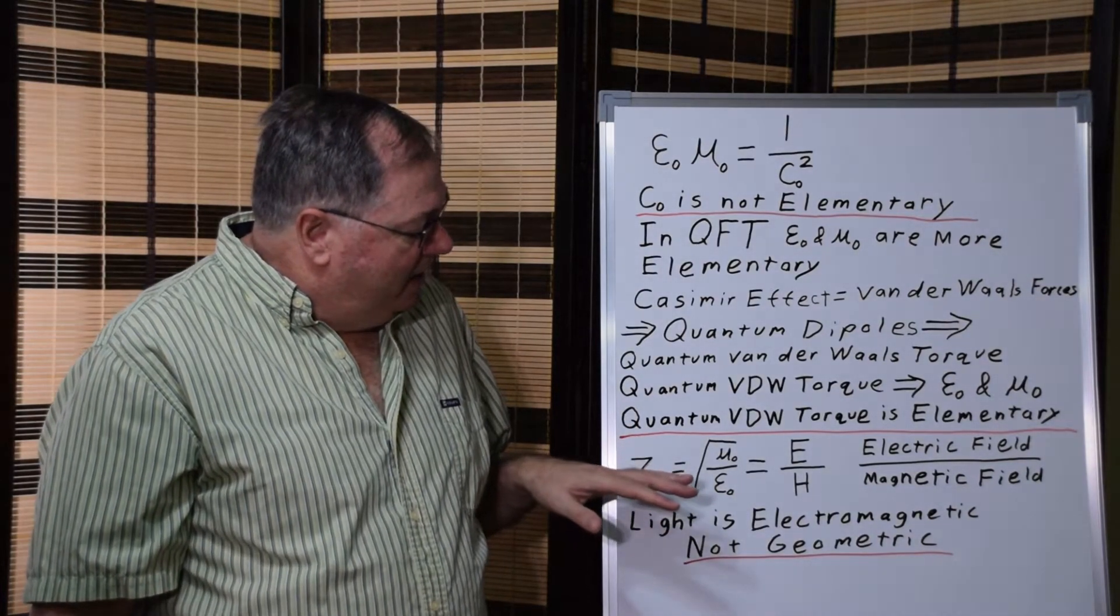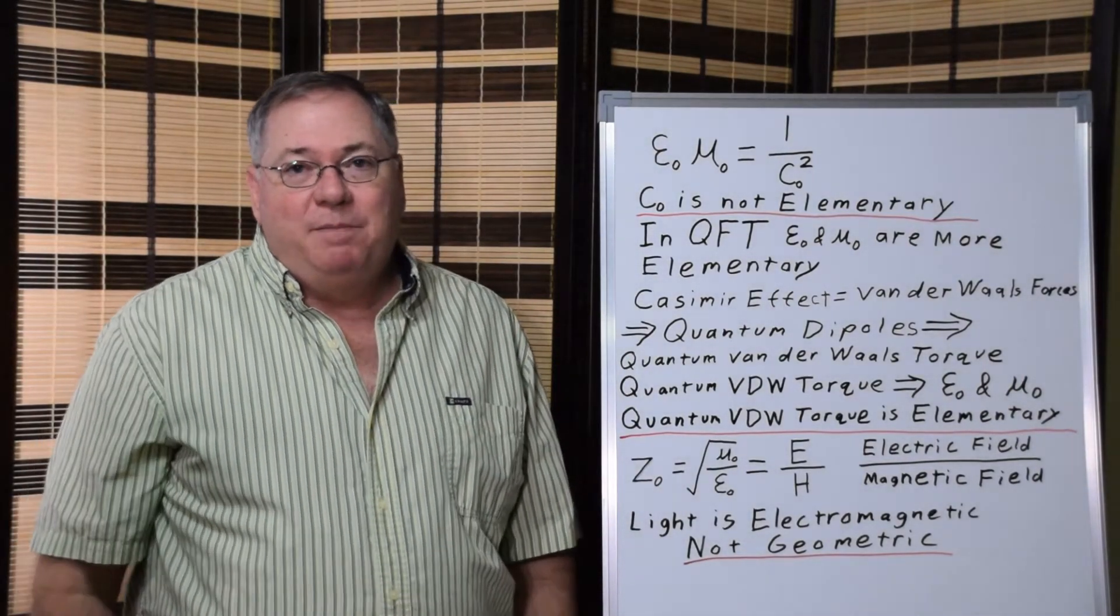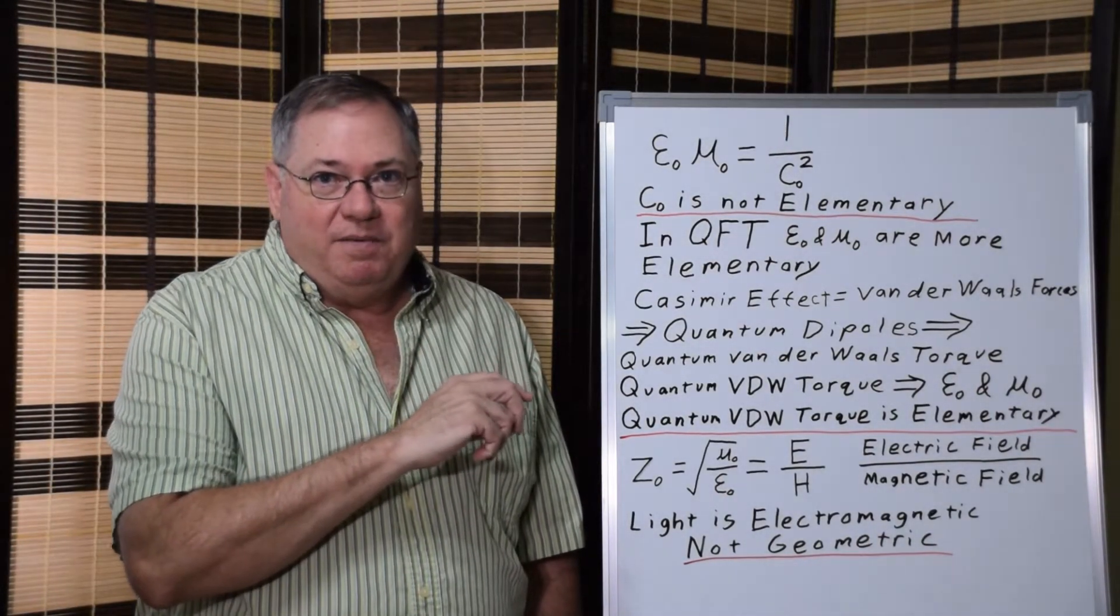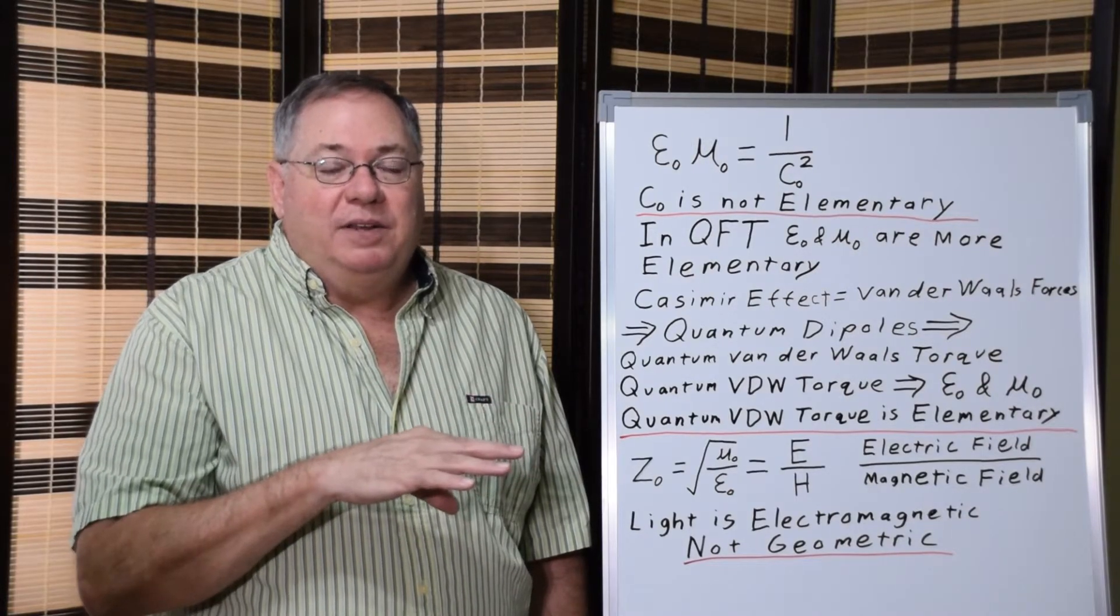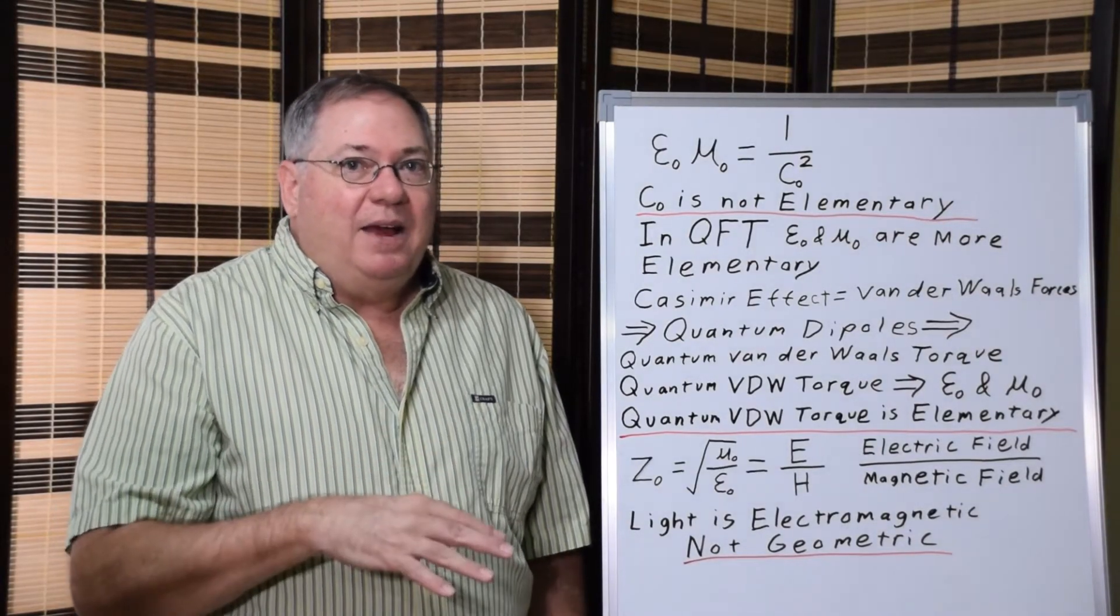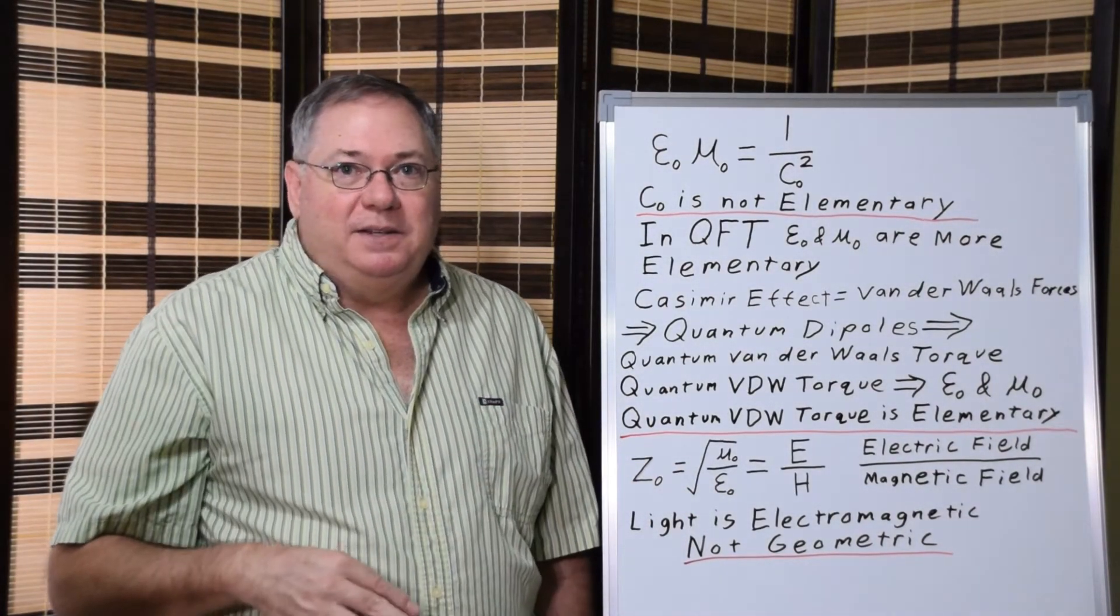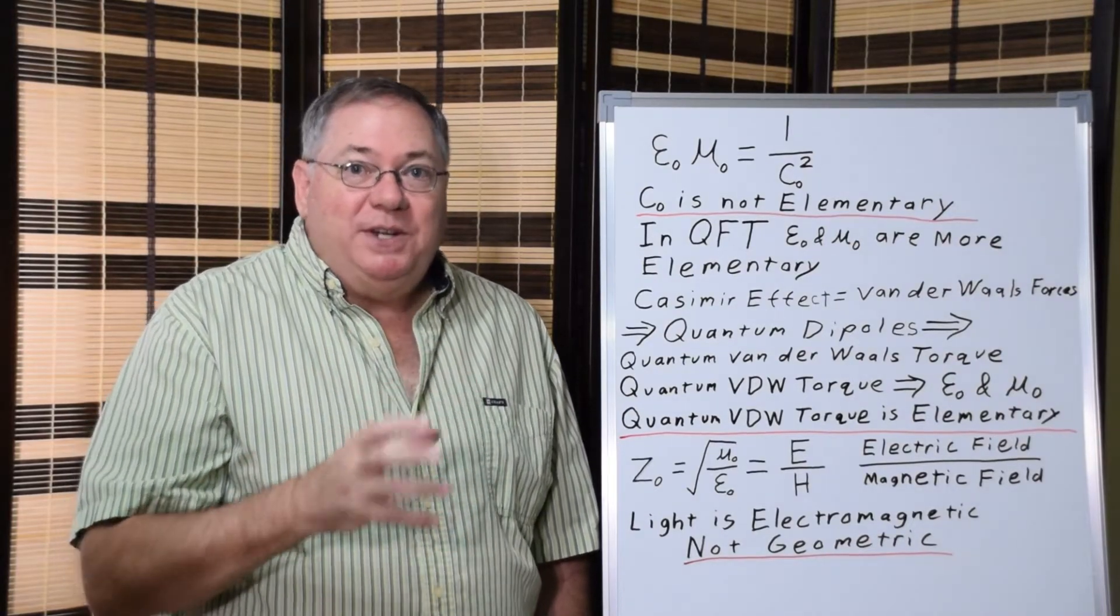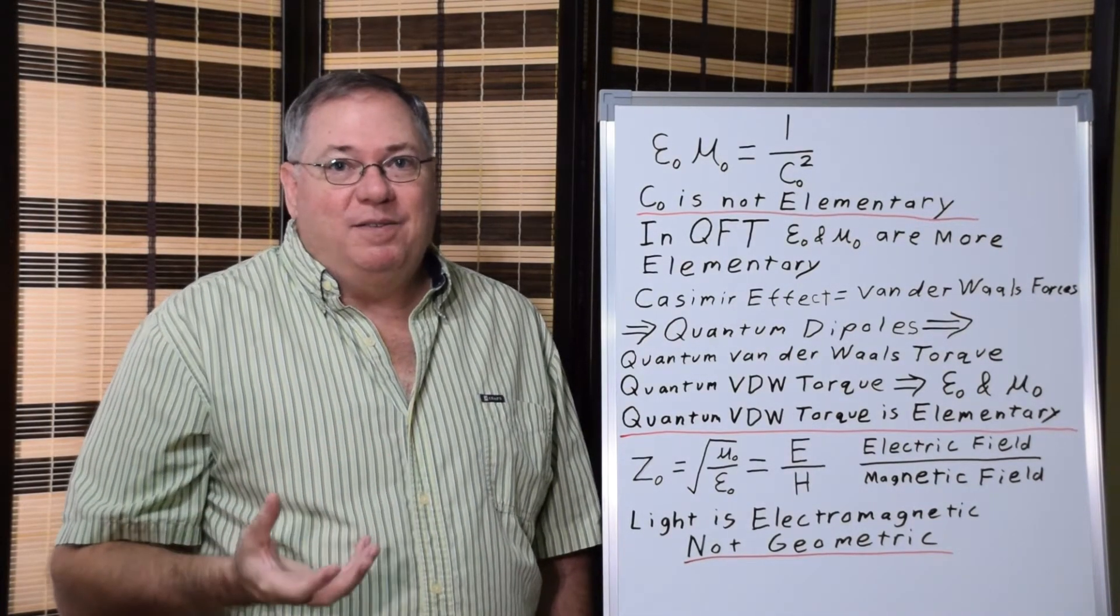So I can also mention the impedance of space, which is a function of the permeability over the permittivity and taking the square root, and which determines the ratio of the electric field strength to the magnetic field strength. And that ratio goes back to the electric and magnetic field strength of the fields produced by the photon. So you can look at it that way. The photon produces these fields. These fields are regulated by the permittivity and permeability as a function of the impedance of space. And once again, we have a speed of light and the actual transmission of light being a function of the electric and magnetic constant that comes out of the quantum field.